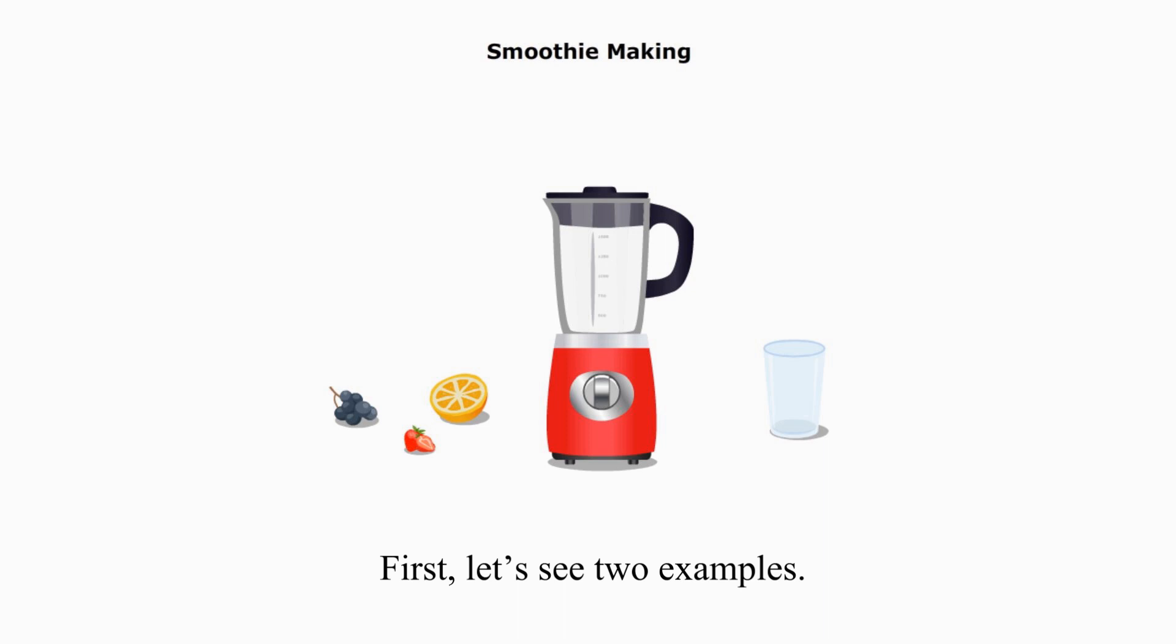First, let's see two examples. The first example is smoothie making. If you give me a random amount of grape, orange and strawberry, I can put them into a blender and easily get you a cup of smoothies.